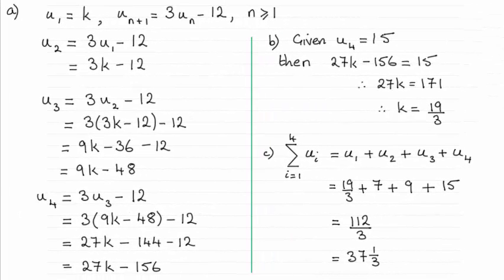Hi there. Now as you can see the answers to part A: for the second term was 3k minus 12, third term 9k minus 48, and the fourth term 27k minus 156.